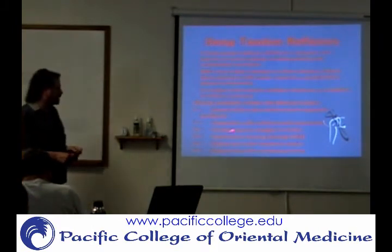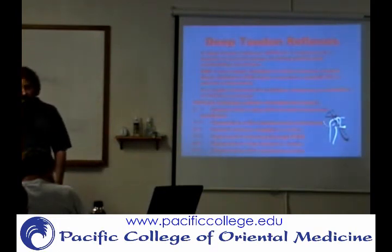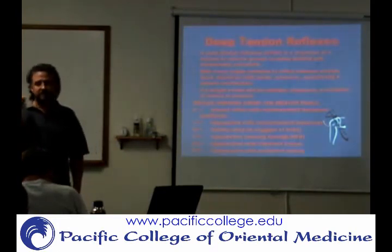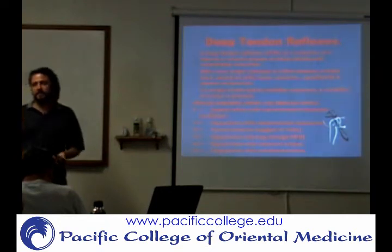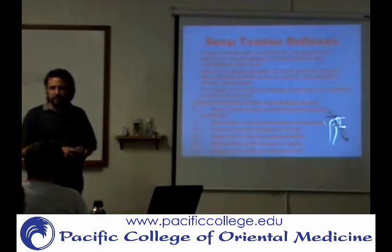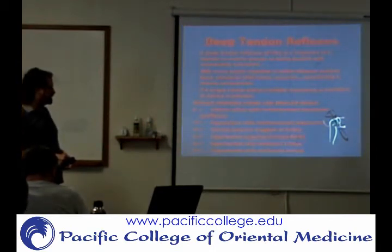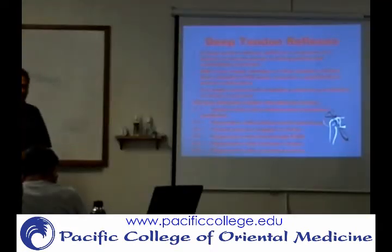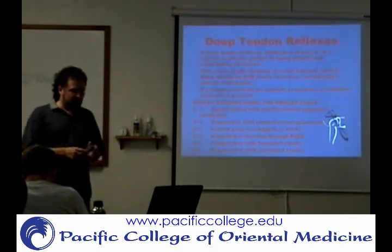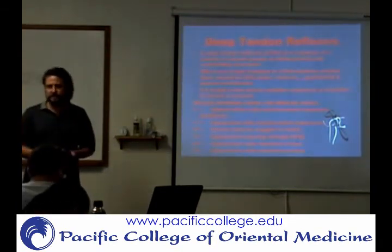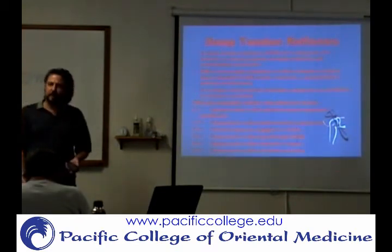Anything above two is going to be hyperreflexia. If you have upper motor neuron lesions, you're losing the inhibitory effect on the motor fiber, so you're going to have an increased reflex. When you get into grades four and five, you're talking about hyperactive reflexes — increased reflexes, maybe moving pretty far through the range of motion. You'll see that in upper motor neuron lesion types of conditions.